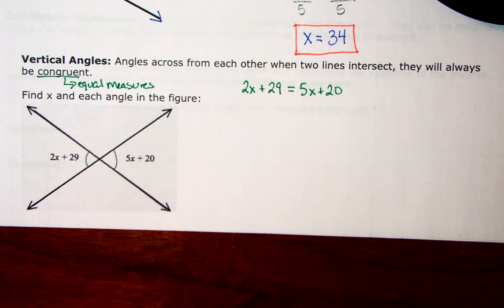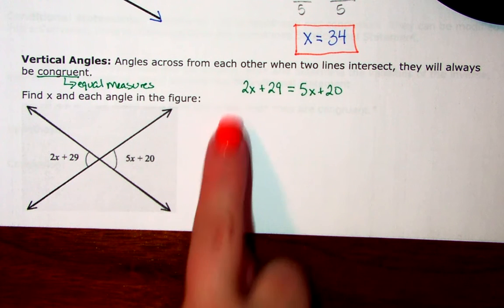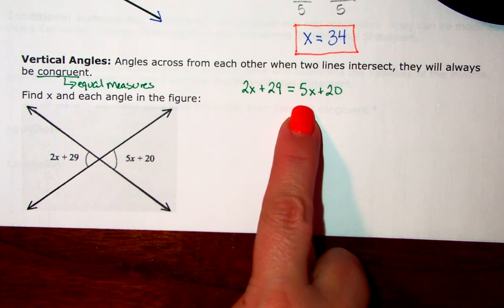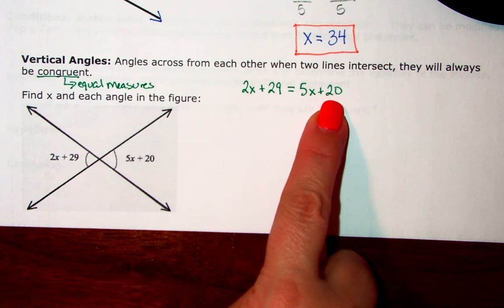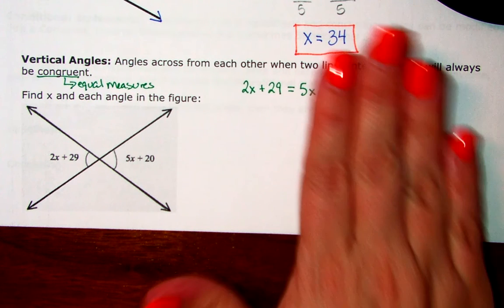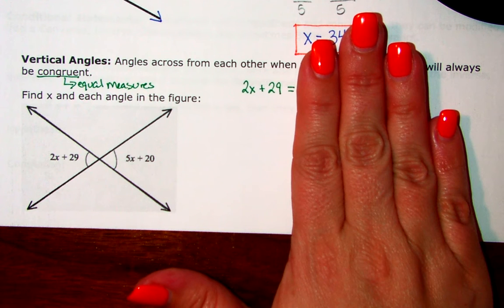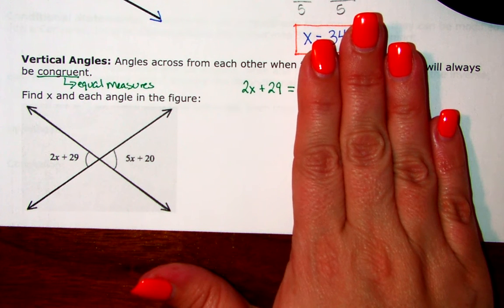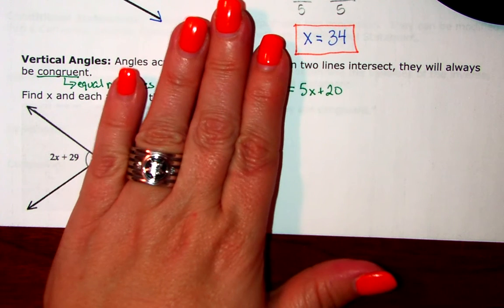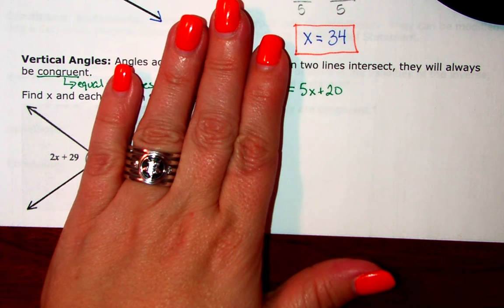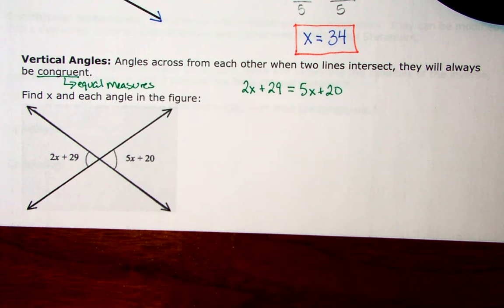So the first thing I'm going to do is look for like terms to combine. I've got a 2x and a 5x, those are like terms, 29 and 20, those are like terms, but remember to combine like terms they have to be on the same side of equals. If I look at the left hand side, nope, there's no like terms there. When I look at the right hand side, nope, there's no like terms there, which means I don't have any like terms to combine. I'm going to start moving my x's to get them together and solve it.